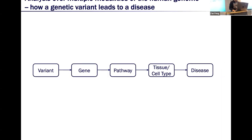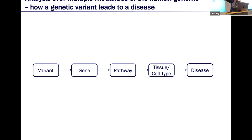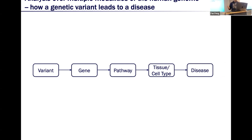Since the completion of the human genome project, many millions of different studies have generated data from different aspects such as genome, epigenome, transcriptome, and 3D nuclear. With all this data, we can answer a lot of questions of interest — for example, how genetic variants can lead to a disease. To answer those questions, we need to refer to different databases, data consortia, and connect those different modalities together.